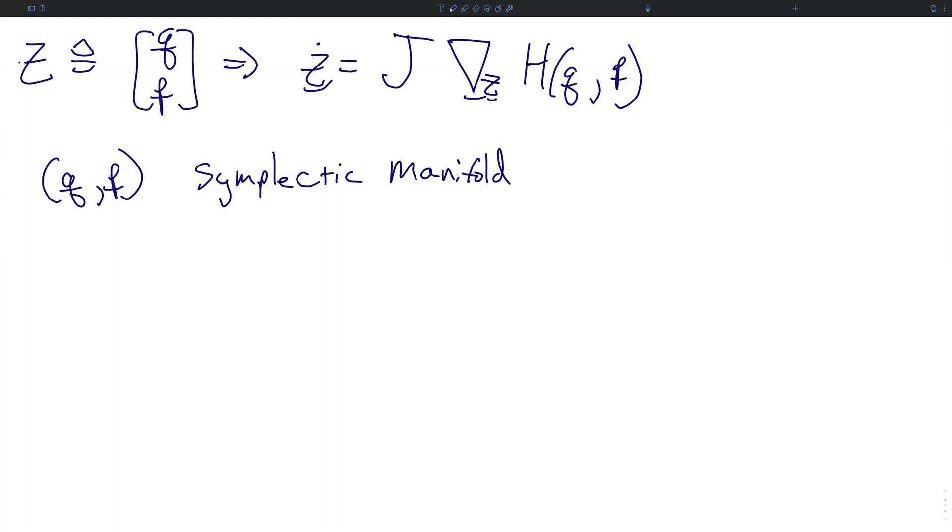Our symplectic manifold is a smooth manifold of this kind that's equipped with this thing called the symplectic form, that closed non-degenerate differential two form. A differential form defines an integrand without the use of coordinates. As an example, let's define U to be an open set on the n-dimensional real numbers, R to the n, and we define F as a smooth function on U.